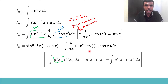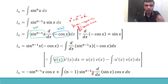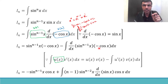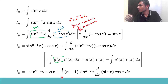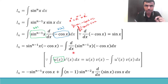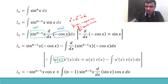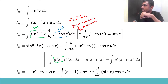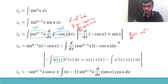Now, the derivative of sin^(n-1) x is (n−1)·sin^(n-2) x · cos x, by the chain rule. There is a minus sign already present, so minus times minus gives plus. Krishna has a doubt — he wants me to explain how I got the derivative of sin^(n-1) x. Let me explain that now.